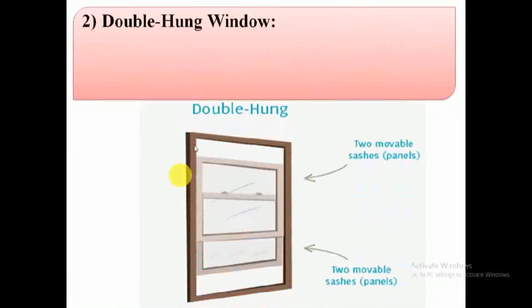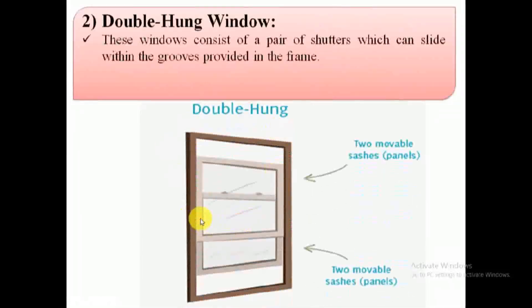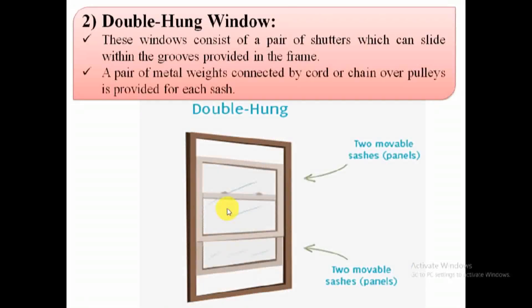2. Double-hung windows. It consists of a frame and a pair of shutters arranged one above the other, which can slide vertically within the grooves provided in the window frame.